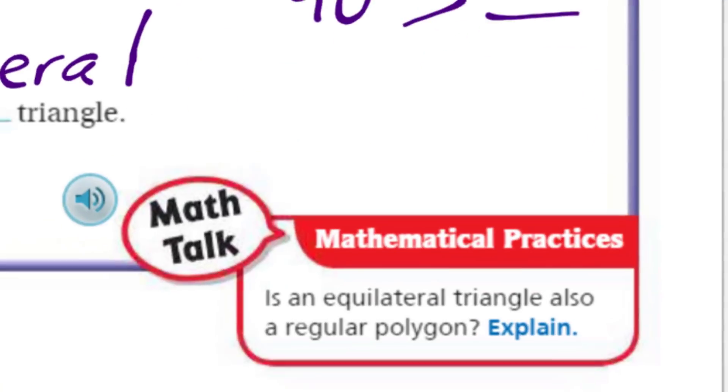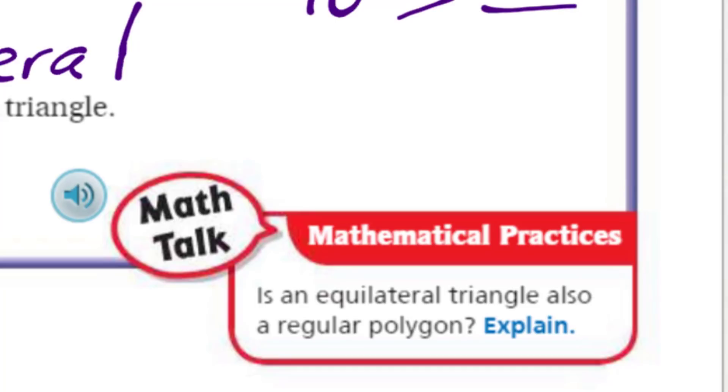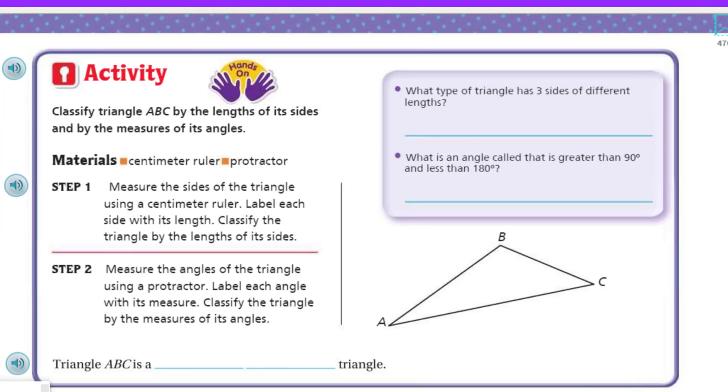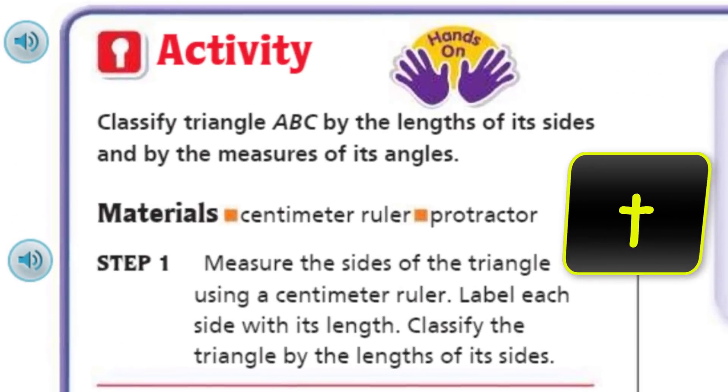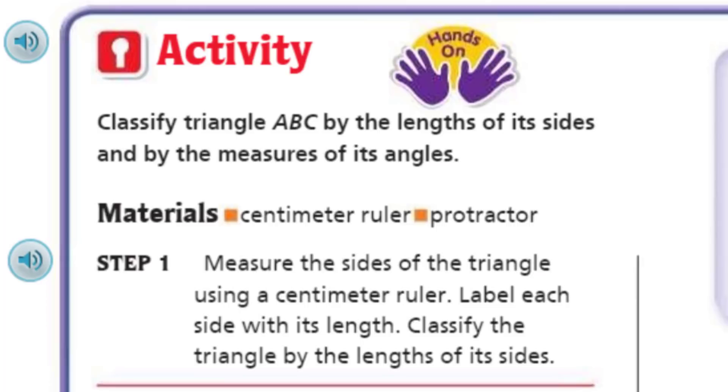Is an equilateral triangle also a regular polygon? It is. We already kind of learned that. Yes. Move on. Now it looks like it's hands-on. It's the purple hands guy. Classify triangle ABC by the length of its sides and by the measure of its angles. I'm going to need a centimeter ruler and a protractor.